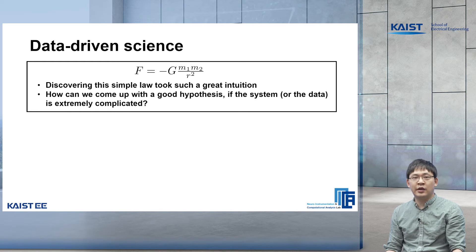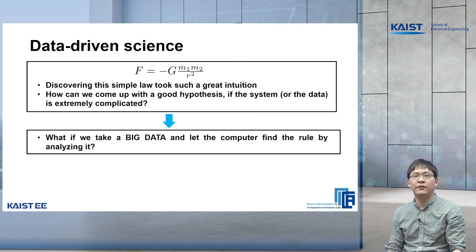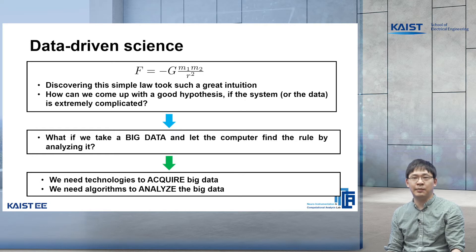Then we may ask ourselves: how can one possibly come up with a good hypothesis for a system that is too complicated and beyond human intuition? One possible solution could be to take big data and let the computer analyze it to find the rules, which is kind of what we are already doing a lot with machine learning. To do that, we need technologies to acquire big data and we also need algorithms to analyze the big data.